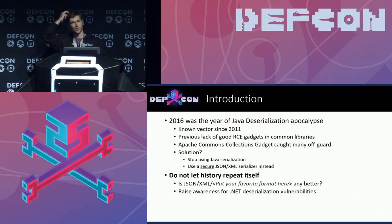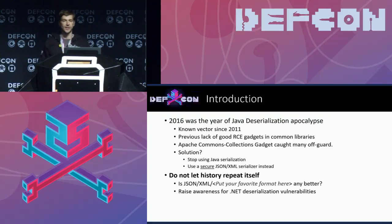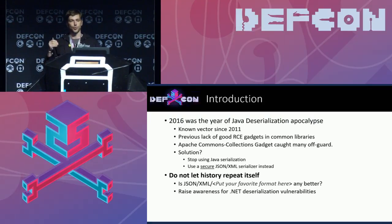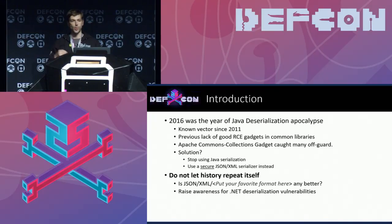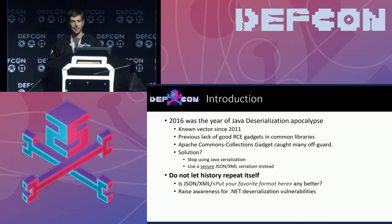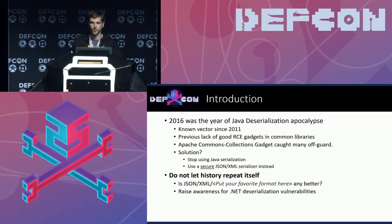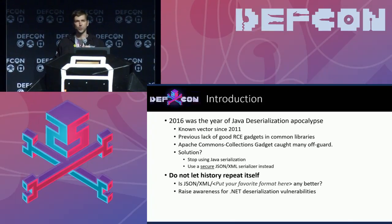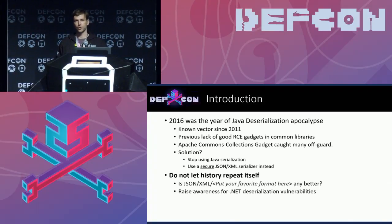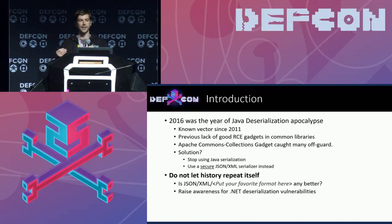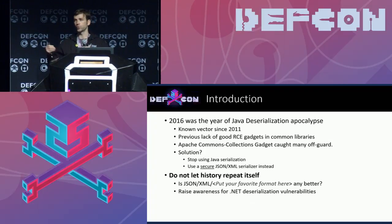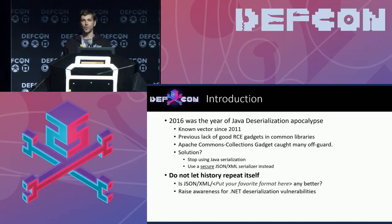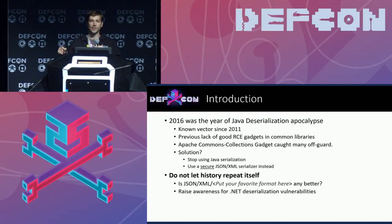Last year was the year of Java deserialization apocalypse, as we like to call it. Literally dozens or even hundreds of new CVEs were reported around Java deserialization, and around those CVEs, thousands of vulnerable applications and appliances. It was a bad problem. This was a very well-known vector since at least 2011, but the community was not paying attention because there was no really good remote code execution gadget until 2015, when the Apache Commons Collection gadget was published.